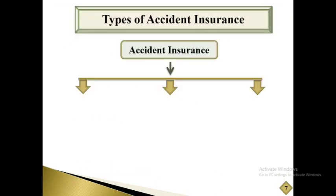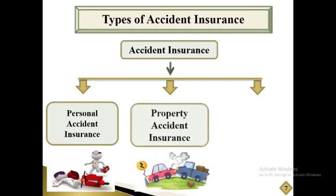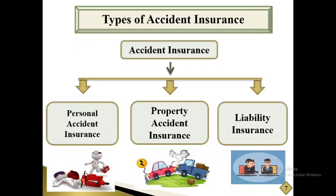Dear students, now you can learn the types of accident insurance. There are three types of accident insurance. The first one is personal accident insurance, which covers the death and disability of the insured from an accident and provides financial support. The next one is property accident insurance, where the insured gets financial assistance for damages of any property arising solely and directly from an accident. The last one is liability insurance, which provides the insured with protection against claims resulting from injuries and damages to other people or others' property.